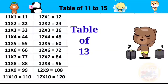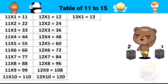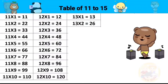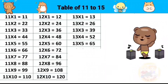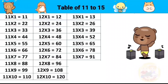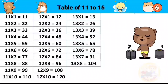Table of 13. 13 ones are 13, 13 twos are 26, 13 threes are 39, 13 fours are 52, 13 fives are 65, 13 sixes are 78, 13 sevens are 91, 13 eights are 104, 13 nines are 117.